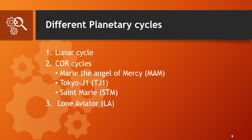Out of the three COR cycles, one will be the dominant cycle for your stock or commodity. For example, for Nifty 50 which I trade, MAM is the dominant cycle. For gold or silver metals, Tokyo J1 is the dominant cycle. St. Mary is dominant in IBM. A common question people ask is: since these are planetary cycles, do I need to be an astrologer or study astrology? The answer is no — I myself am not an astrologer.